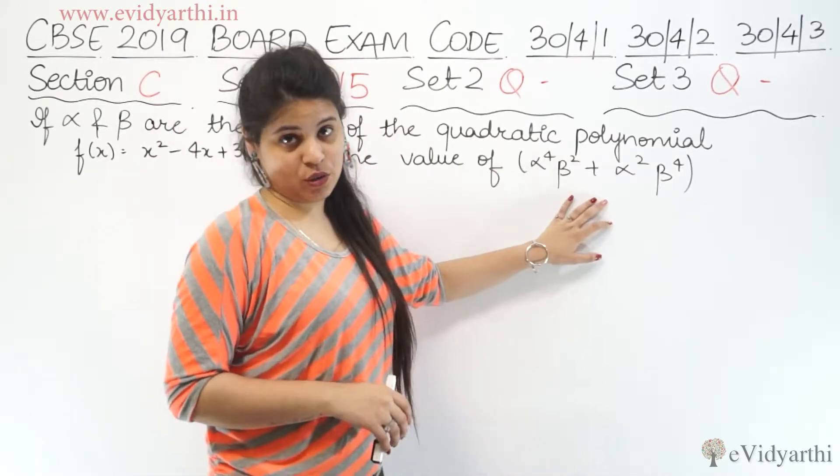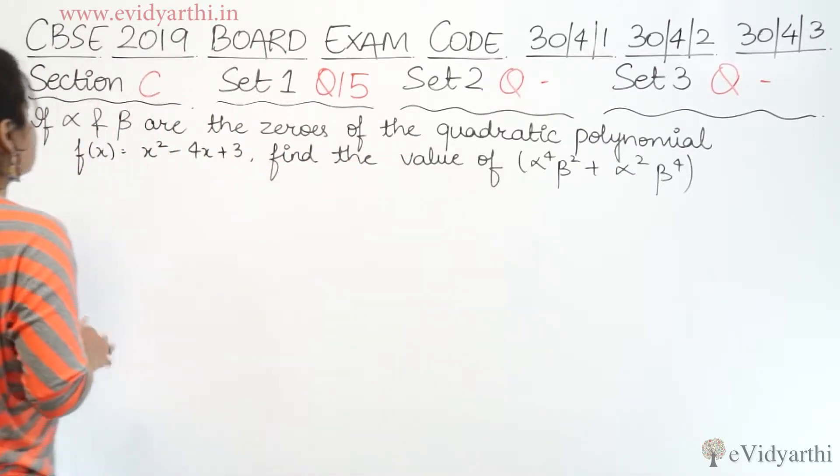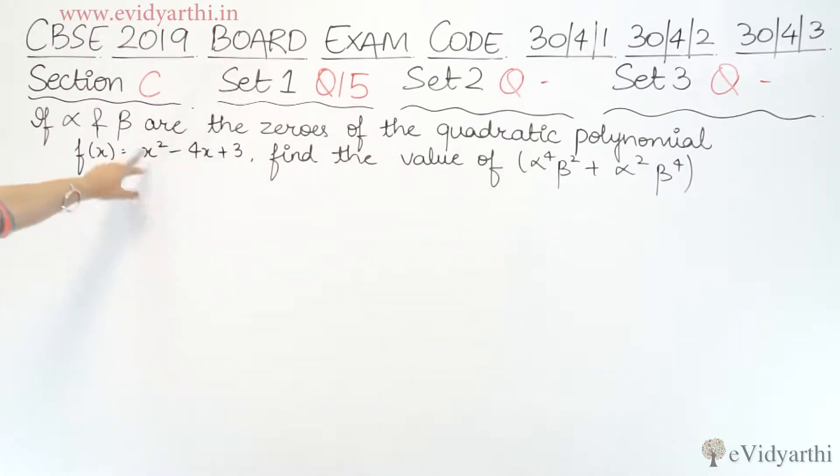So you have to find this value. What is given? We are given a quadratic polynomial whose zeros are given. Now...